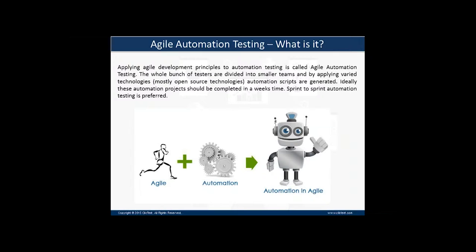As we understand the basic agile methodology, when we start implementing these agile development principles in our automation testing, that is where we start using agile automation testing. The process where the whole team or the testers in your testing department are divided into sub-teams, and each team works on a specific technology and builds their scripts. Ideally, as we understand, a sprint in agile methodology is between two to four weeks, and we want to complete our sprint automation testing within that sprint with no backlog carried into the next sprint.